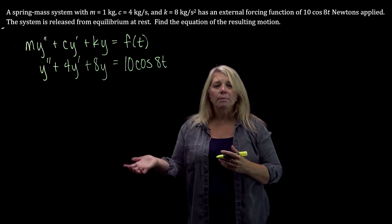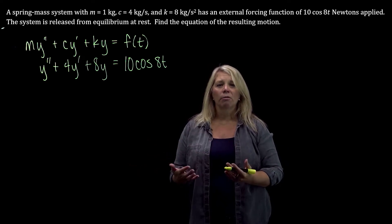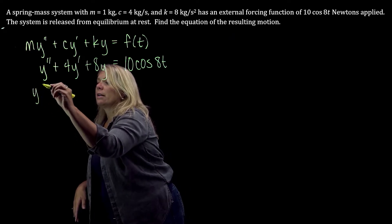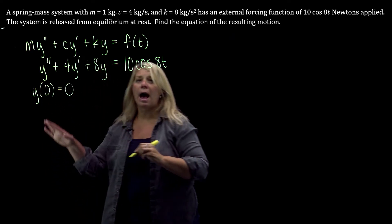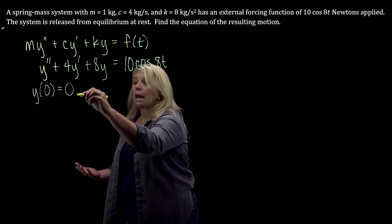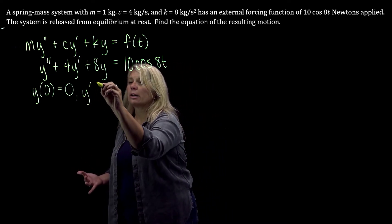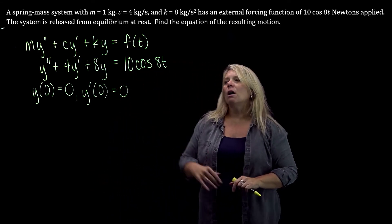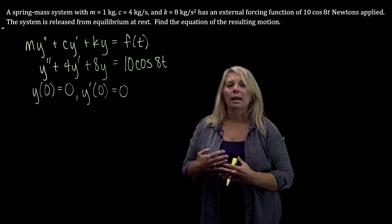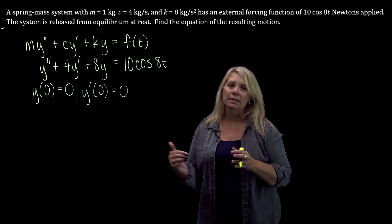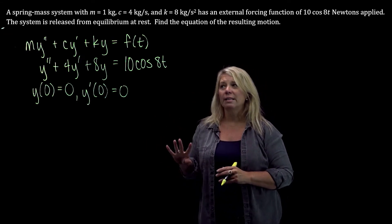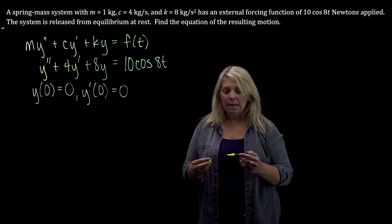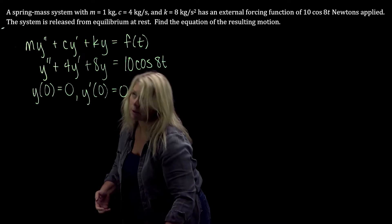Our object is released from rest at equilibrium. So our initial condition, our initial position is 0 since we are at equilibrium position, and from rest, so the initial velocity is also 0. So we need to solve this differential equation. I'm going to write down a little bit of those steps, but just in order to save some space, I'm not going to write out every step for solving that differential equation.